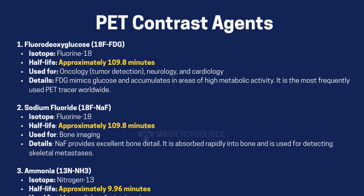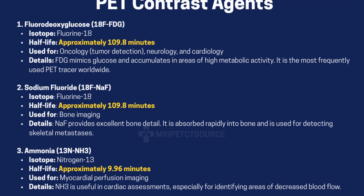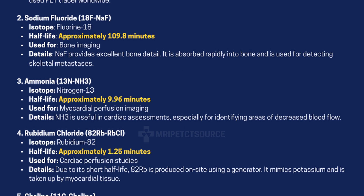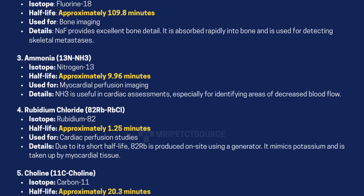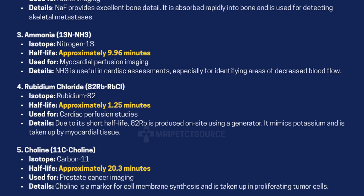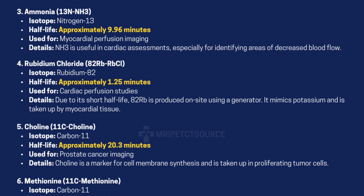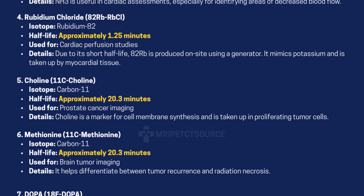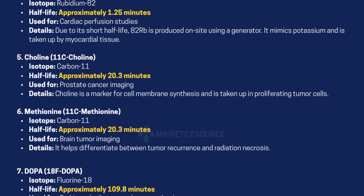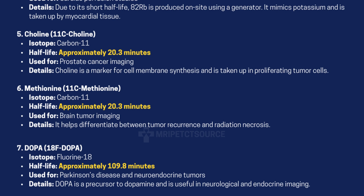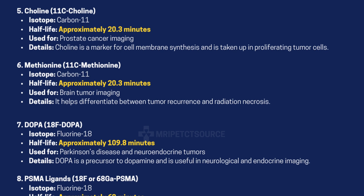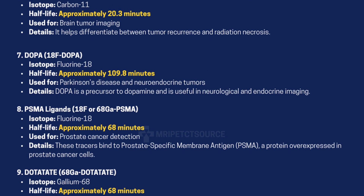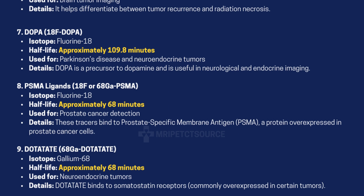These radiotracers emit positrons, which allow the scanner to produce detailed images of how tissues and organs are functioning in real time. Here are some of the most commonly used PET contrast agents, along with what they're used for, and most importantly, their physical half-lives.